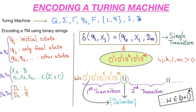A Turing machine is used to accept a recursively enumerable language. Q represents the set of states, sigma represents the set of input symbols, tau represents the set of tape symbols, Q-naught is the initial state, F is the final state, L and R is the direction in which the tape is going to move — that is left and right — and delta is the transition function.